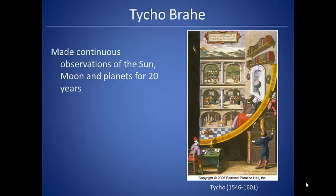In the late 1500s, a man named Tycho Brahe collected a lot of data. He made continuous observations of the sun and moon and planets for nearly 20 years. He was the data collector.